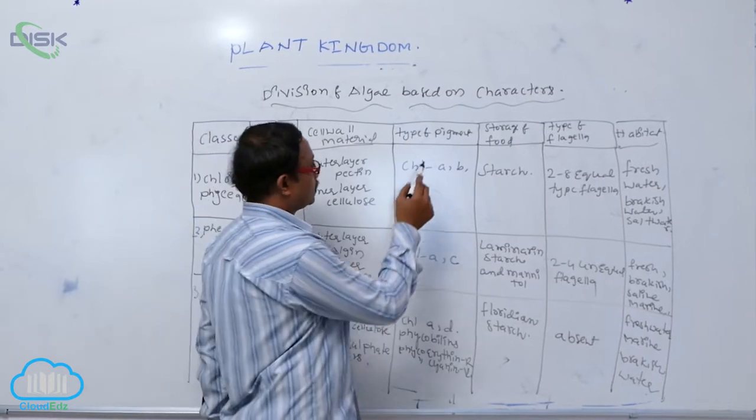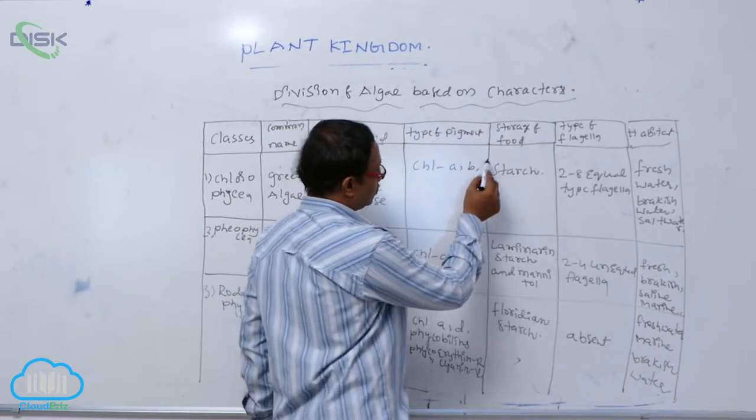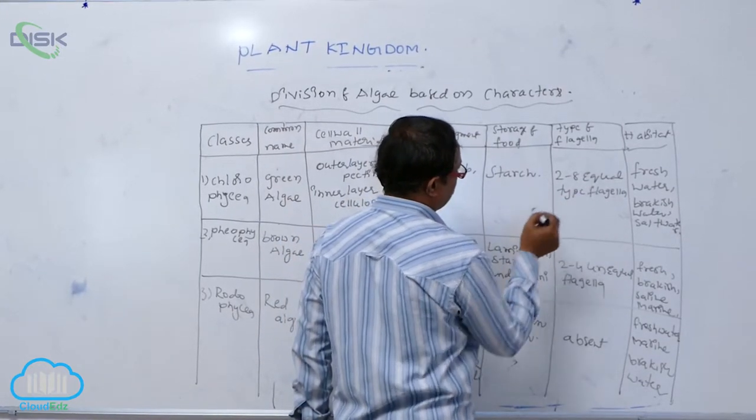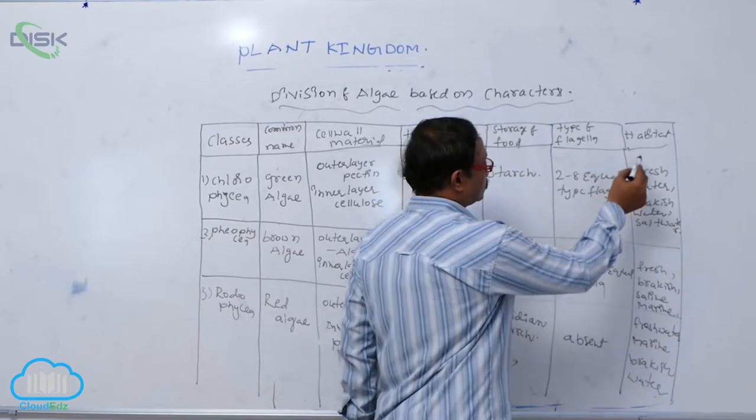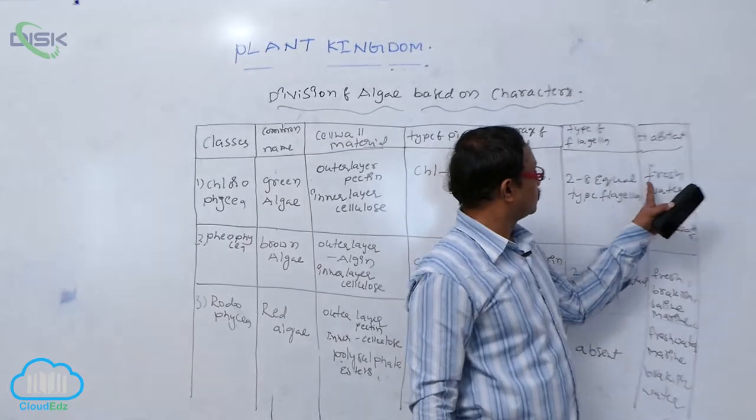The type of pigment is chlorophyll A. Storage material is starch. Flagella are up to 8 equal types. This means it can survive in different regions.